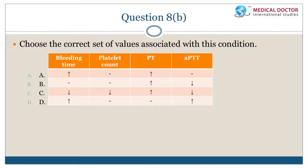Practice question: The most likely laboratory findings in von Willebrand's disease are elevated bleeding time, normal platelet count, and elevated aPTT.